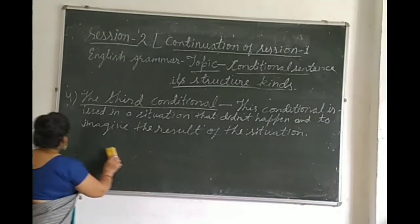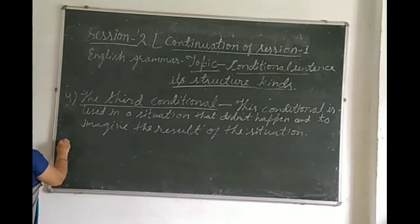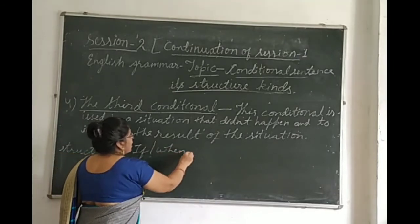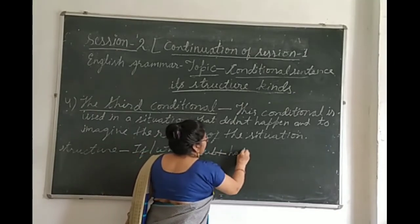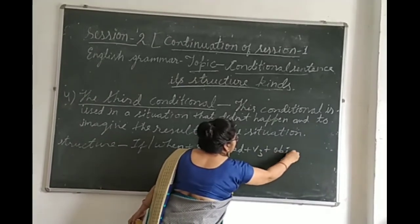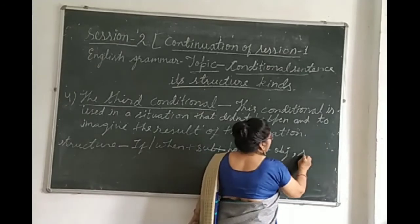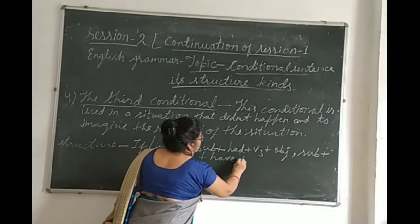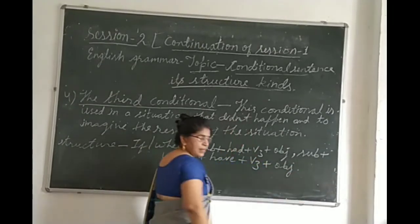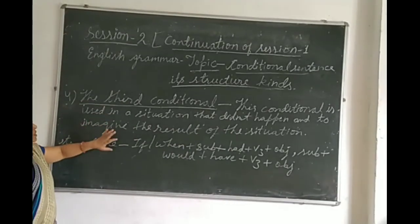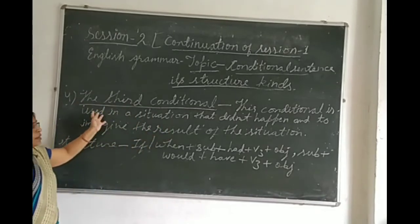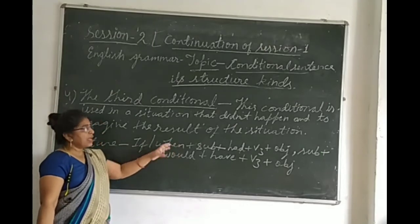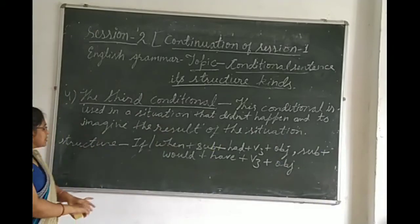I will write the structure now, and then we will form sentences with the help of the structure. The structure is: if plus subject plus had plus past participle plus object. The second part: subject plus would plus have plus past participle plus object. You have to remember this structure to identify whether a sentence is a third conditional. If your sentence matches this structure, then it is a third conditional sentence.